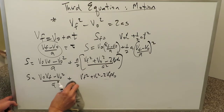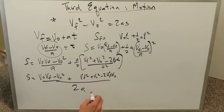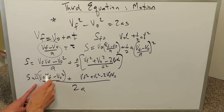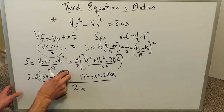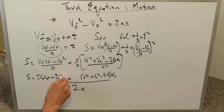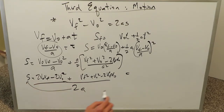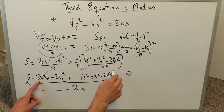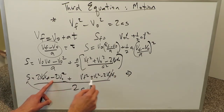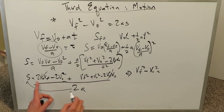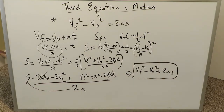Using a common denominator of 2a, the first fraction with denominator a gets multiplied by 2, giving 2·vo·vf minus 2·vo squared. Combining everything: 2as equals 2·vo·vf minus 2·vo squared plus vf squared plus vo squared minus 2·vf·vo. The 2·vo·vf terms cancel, and minus 2·vo squared plus vo squared gives minus vo squared. So vf squared minus vo squared equals 2as — the formula has been derived algebraically.